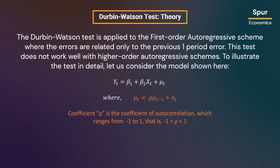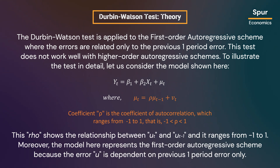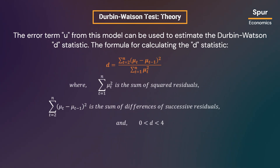The coefficient rho associated with mu t minus 1 is known as the autocorrelation coefficient. This rho shows the relationship between mu t and mu t minus 1, and it ranges from minus 1 to 1. Moreover, the model here represents the first-order autoregressive scheme because the error mu is dependent on the previous one-period error only.